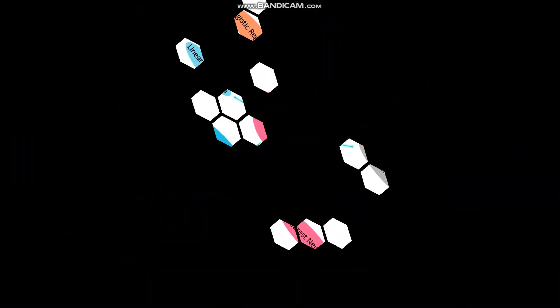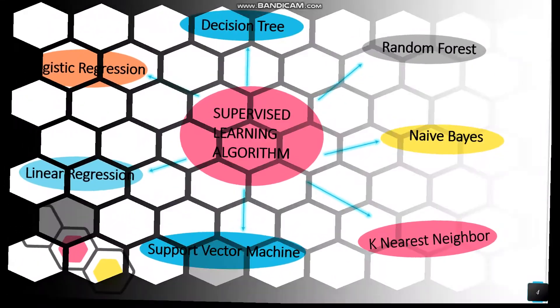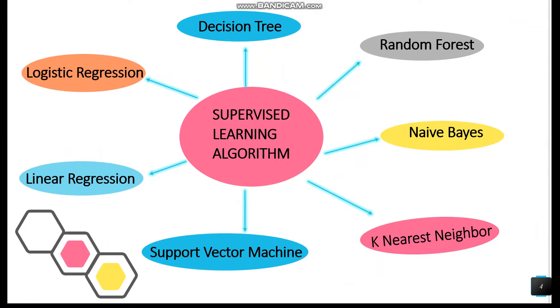First is linear regression, second is logistic regression, third is decision tree, fourth is random forest, fifth is naive Bayes classifier, sixth is support vector machine, and seventh is k-nearest neighbor.